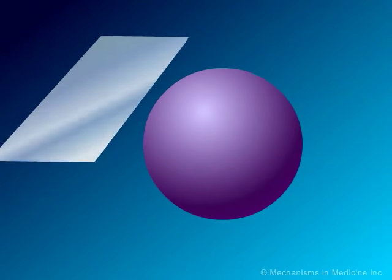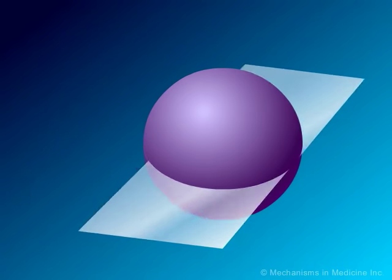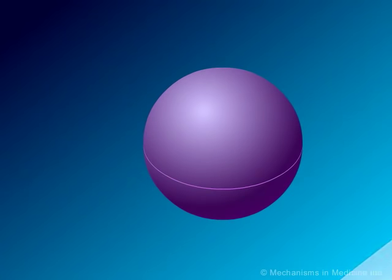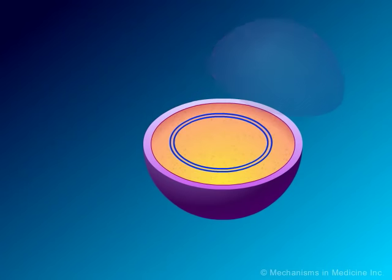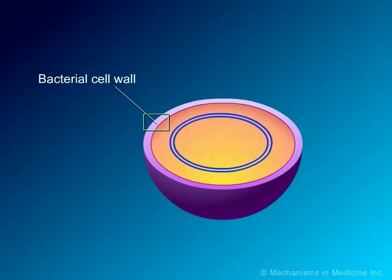Structurally, most bacteria consist of a cell membrane surrounded by a cell wall and, for some bacteria, an additional outer layer. Internal to the cell membrane is the cytoplasm which contains ribosomes, a nuclear region, and in some cases, granules and/or vesicles.